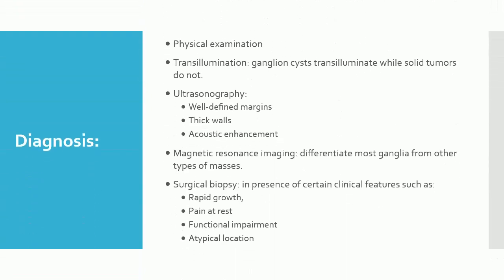Diagnosis: The diagnostic approach depends upon the physical examination. Transillumination: In patients with a readily palpable lesion, transillumination provides an easy in-office method for differentiating ganglia from solid tumors. Ganglion cysts transilluminate while solid tumors do not.